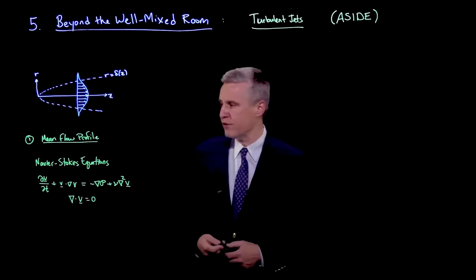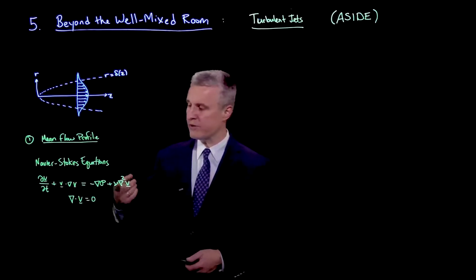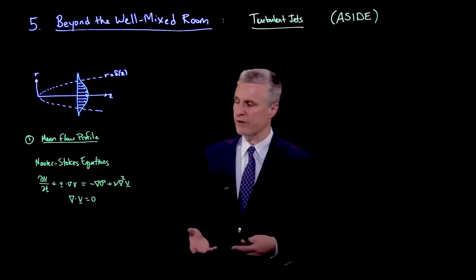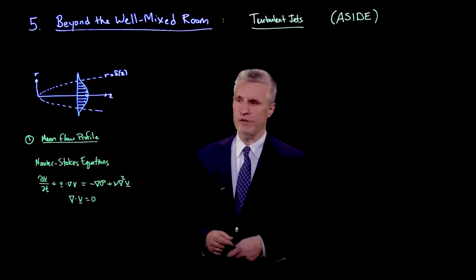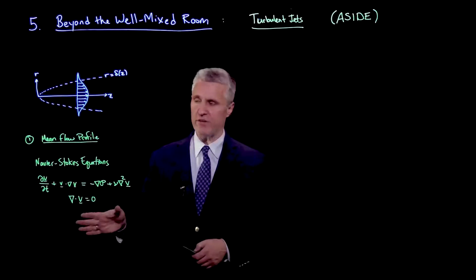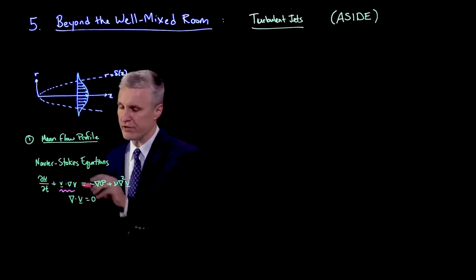In order to study the mean flow profile, we begin with the Navier-Stokes equations, which describe the momentum conservation and mass conservation or continuity of an incompressible, so-called Newtonian fluid. This is a complicated set of equations. In particular, we have this nonlinear term here, which is the inertial term.